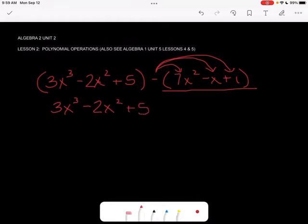That would be a negative, and you can put a 1 here if that helps, but negative 1 times 7x squared is just negative 7x squared. Negative 1 times negative x would be a positive x, and negative 1 times 1 is negative 1.